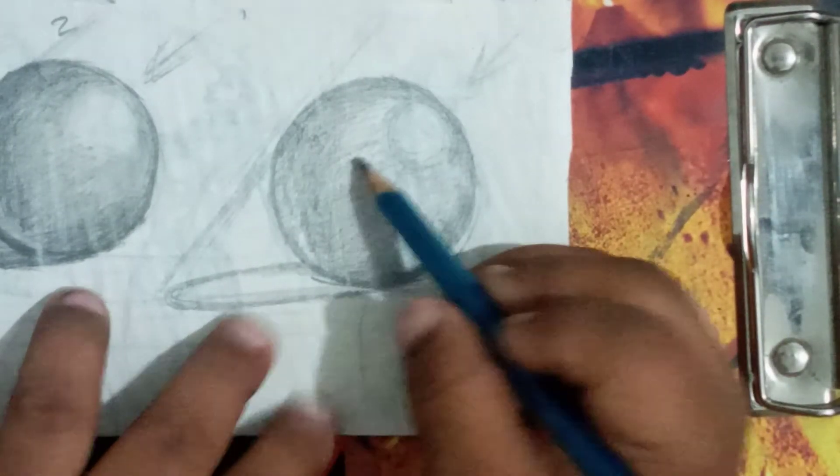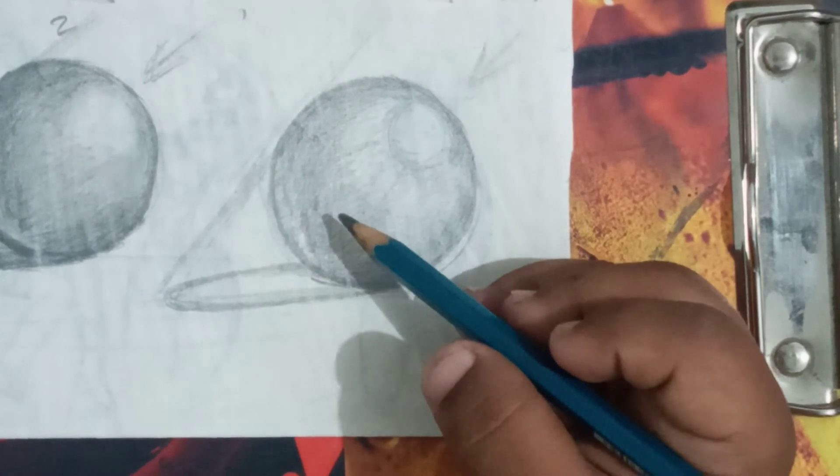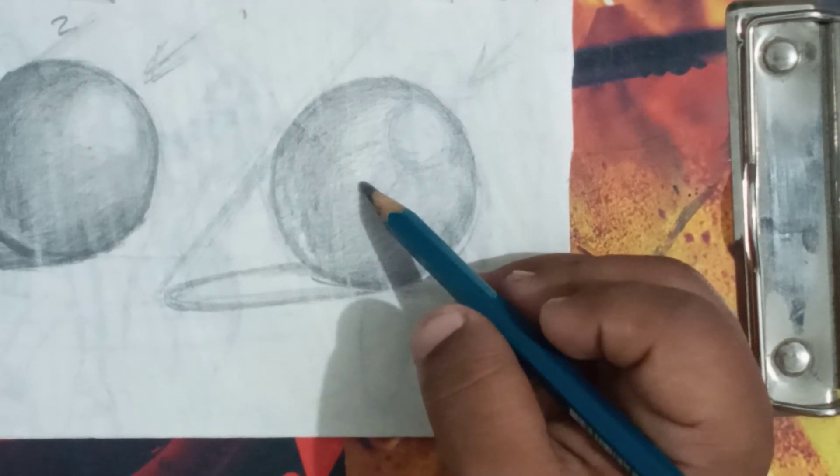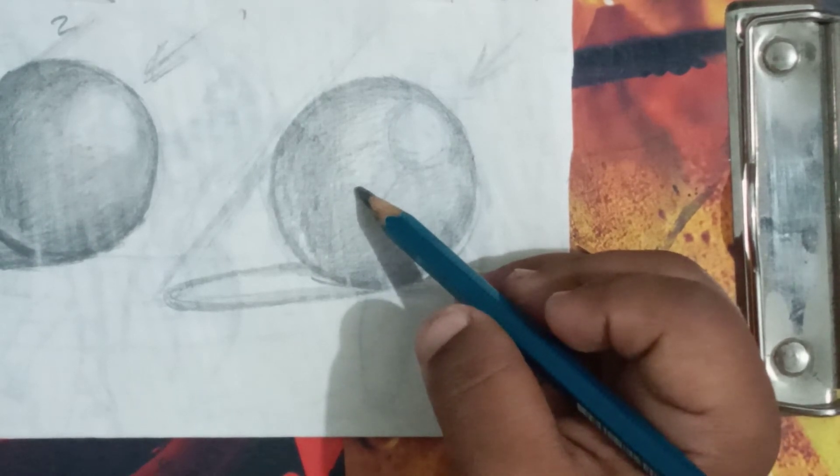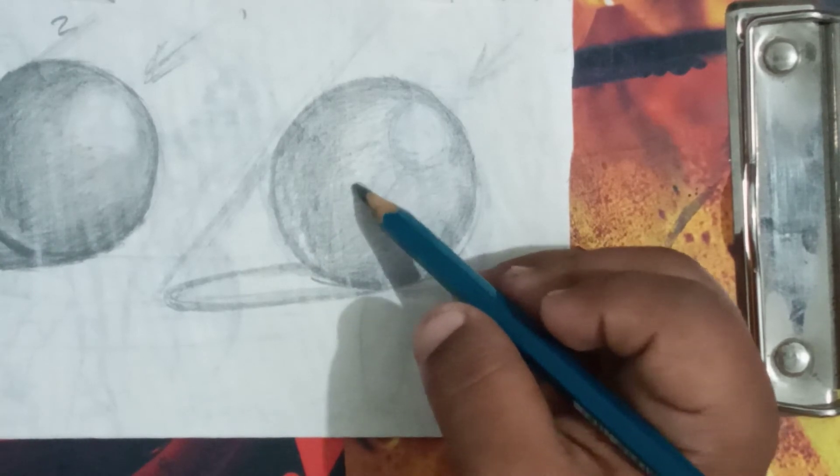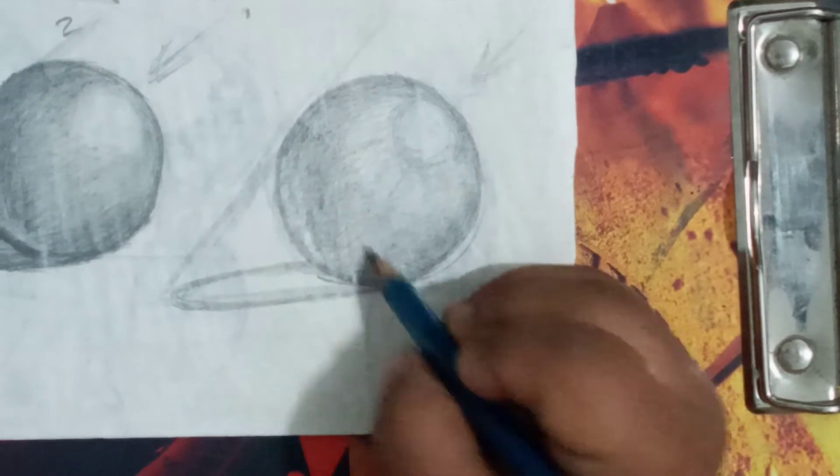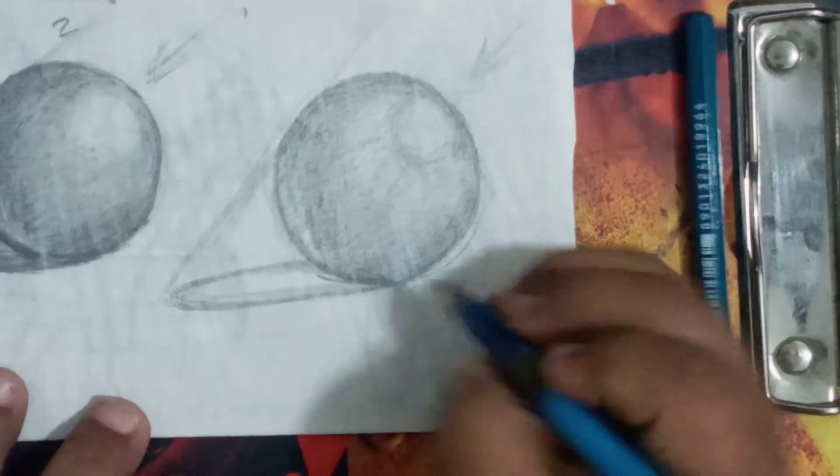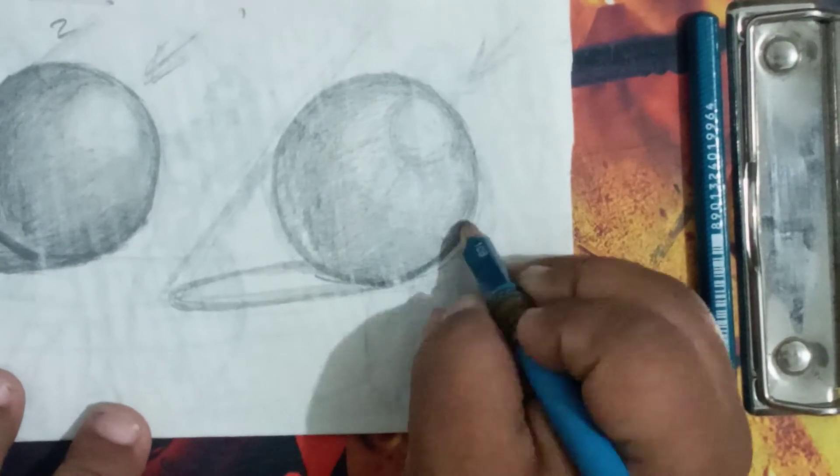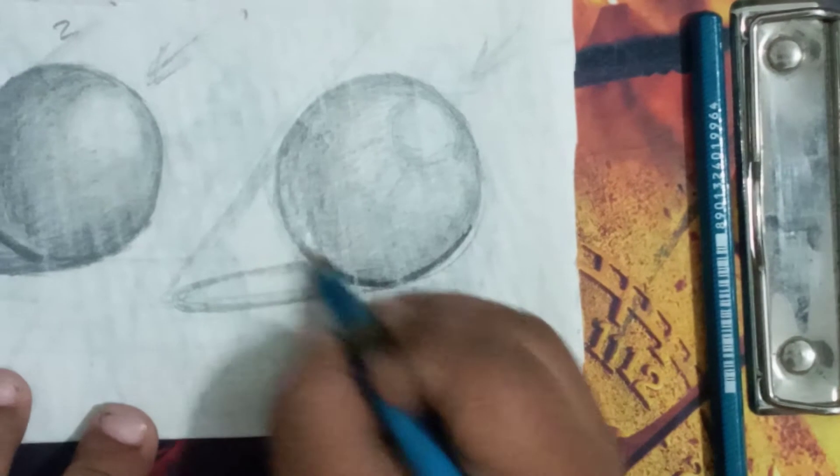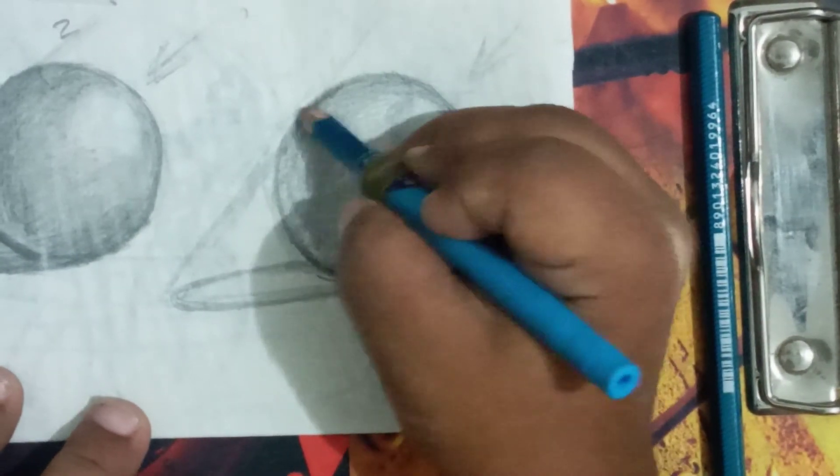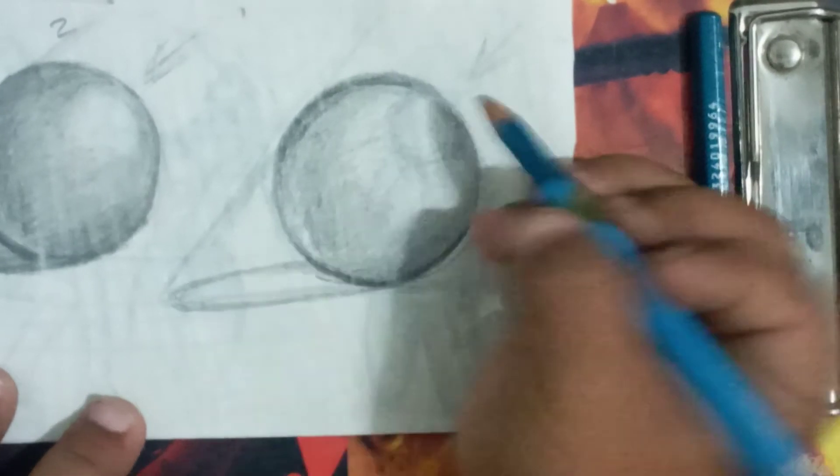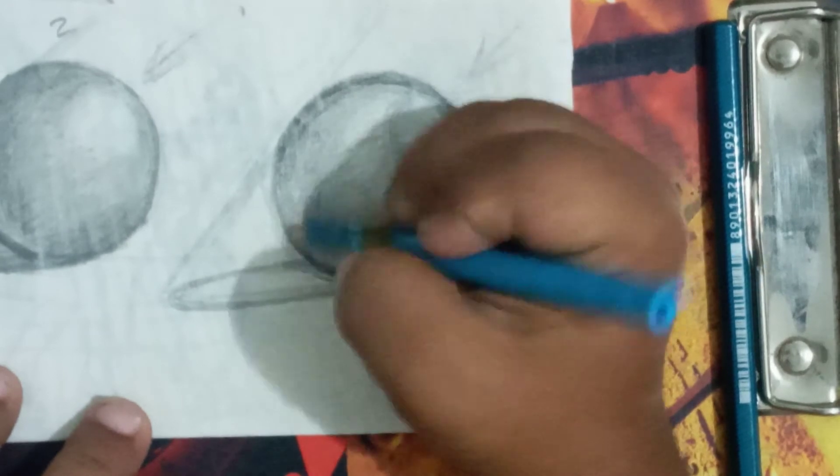I'm using another pencil. This is the 10B pencil to bring the 3D effect. I'm using 10B. Observe the shape and the shadow. You can also draw like this.